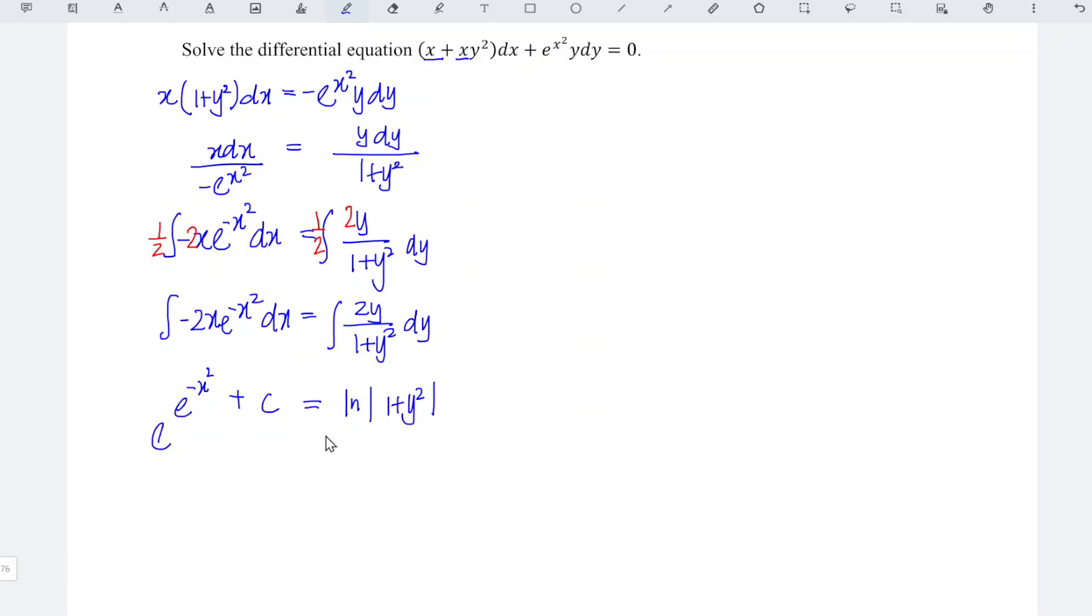Take exponent for both sides. Recall that according to law of indices, we have e^(a+b) is equal to e^a times e^b.